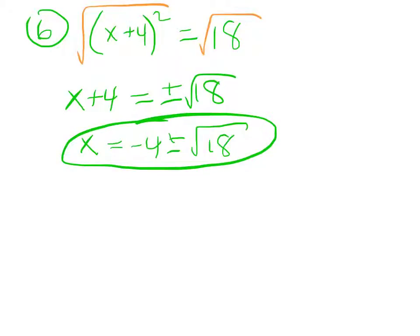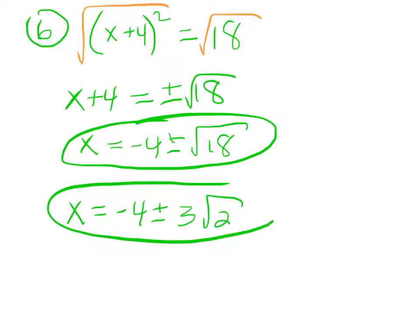But you can also simplify what's under the radical, and we get x equals negative 4 plus or minus 3 root 2. Either of those answers would be acceptable.